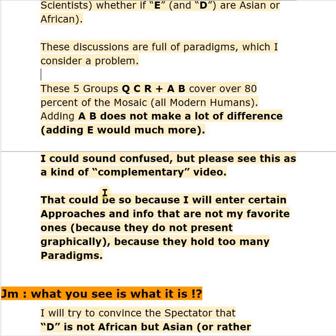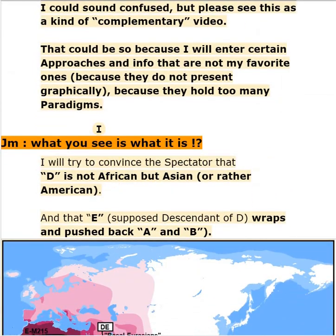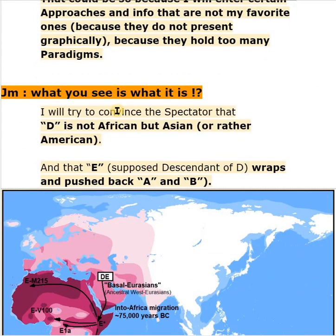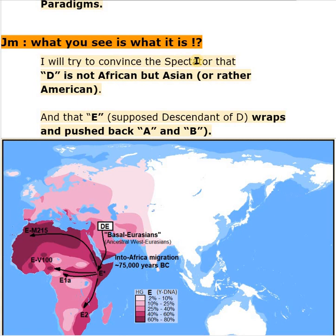I could sound confused, but please see this as a complementary video. I will enter certain approaches and info that are not my favourite ones because they do not present graphically and they hold too many paradigms. I would prefer that what you see is what it is. I will try to convince you that D is not African but Asian, or rather American — that's because of my hypothesis of Out of the Americas.